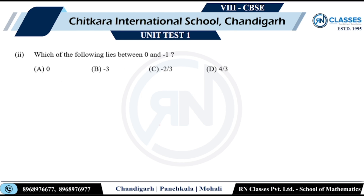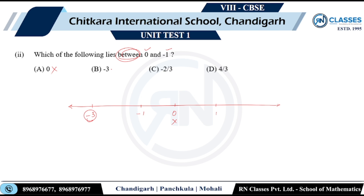Part two: Which of the following lies between zero and minus one? On the number line, this is zero, this is one, and this is minus one. We need a number between zero and minus one — zero cannot be included. Looking at the options: minus two by three — minus two by three lies between zero and minus one, so that is the answer.